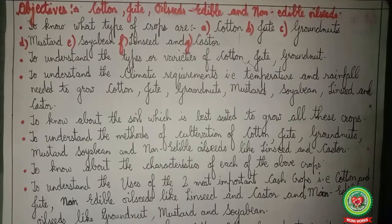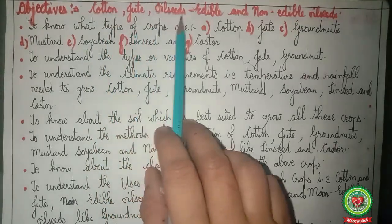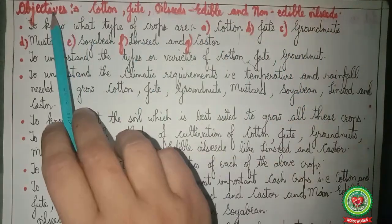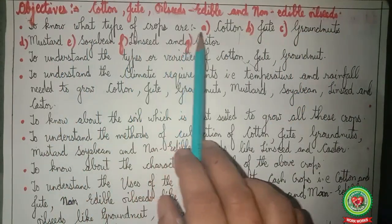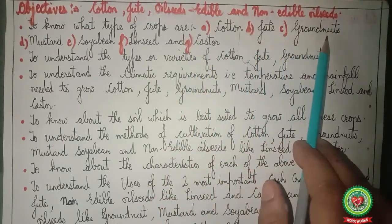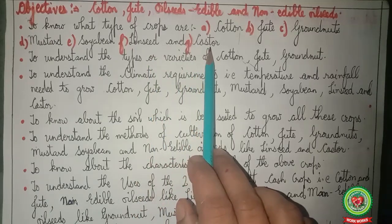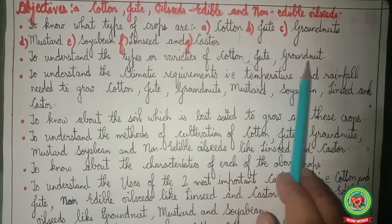In the previous videos related to lesson number 12, Agriculture in India, Part 3, we have studied cotton, jute, and oil seeds — both edible and non-edible. The objectives included understanding what type of crops are cotton, jute, groundnuts, mustard, soya bean, linseed and kester, and understanding the types or varieties of cotton, jute and groundnut.